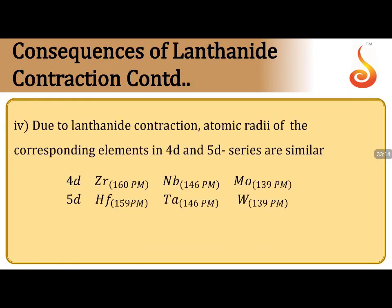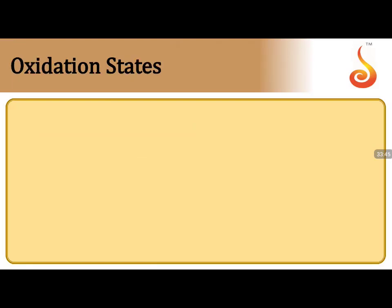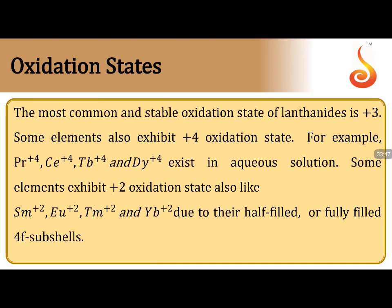Due to lanthanide contraction, atomic radii of corresponding elements in the 4d and 5d series become similar. Important pairs showing similar atomic radii as a consequence of lanthanide contraction: zirconium–hafnium, niobium–tantalum, and molybdenum–tungsten. Examination questions frequently ask which pairs are consequences of lanthanide contraction.